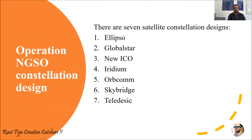Hello everyone, welcome to the course of satellite communications. In today's class we are going to learn about satellite constellation designs, also considered as operational NGSO constellation design — non-geostationary orbits. There are seven satellite constellation designs with respect to non-geostationary orbits: Ellipso, GlobalStar, New ICO, Iridium, OrbComm, Skybridge, and Teledesic.